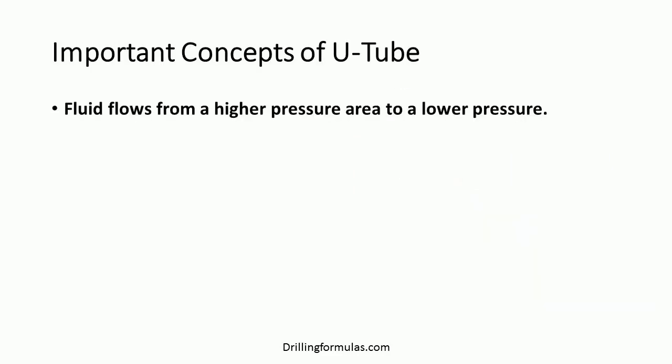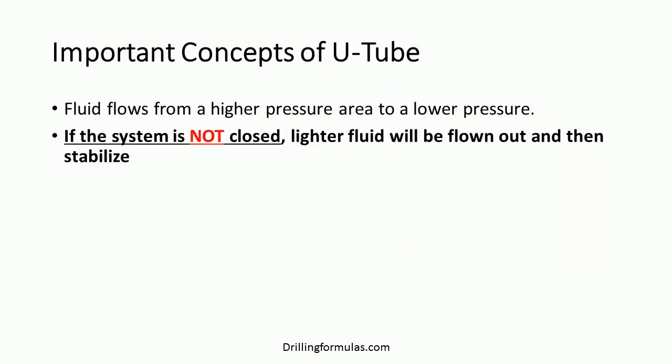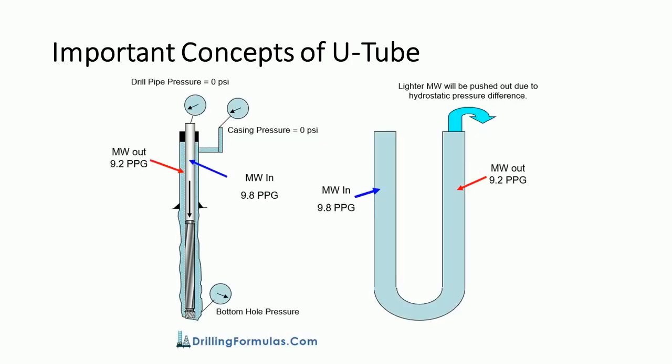There are some important concepts of the U-tube that we would like to discuss. First, fluid flows from a higher pressure area to a lower pressure area. Second, if the system is not closed, lighter fluid will flow out and then stabilize. As you can see from the diagram, higher mud density — 9.8 ppg — is pumped into the drill string, but the lighter mud — 9.2 ppg — is on the annulus side.